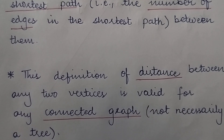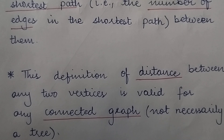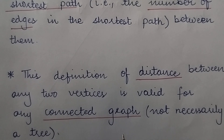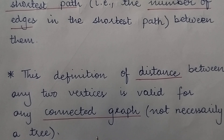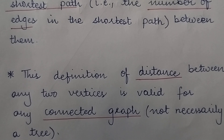This definition of distance between any two vertices is valid for any connected graph and not necessarily a tree. So the technique for finding out the distance between any two vertices is the same whether you talk of a general graph or a tree. The only condition is that it should be a connected graph. A tree is obviously a connected graph, but when we talk of a general graph, we must emphasize that we find the distance among vertices only in a connected graph.